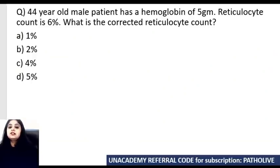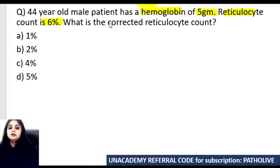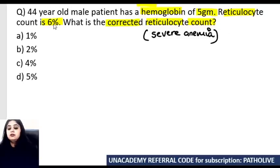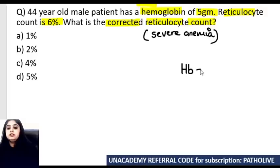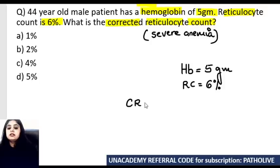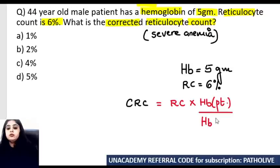The next question is one of the very few numericals in pathology, once a NEET favorite. A 44-year-old male presents with hemoglobin of 5 g and reticulocyte count of 6%. They've asked for the corrected retic count. Whenever dealing with cases of severe anemia, we correct the retic count because it may be coming higher than it should be. Hemoglobin is 5 — less than 7 — so this is a case of severe anemia.